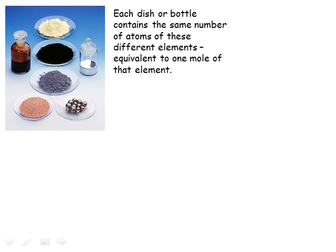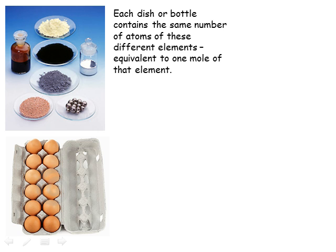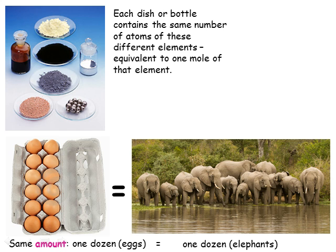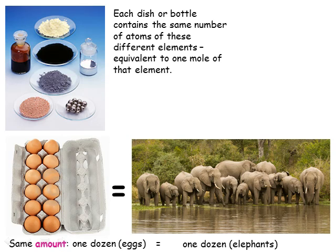We've discussed how a mole of one substance is the same amount as a mole of any other substance, but we ought to know how much a mole actually is. We know that a dozen eggs is 12 eggs, and a dozen elephants is 12 elephants, and that a dozen elephants don't weigh the same as a dozen eggs, even though we have the same amount. In the same way, a mole of eggs would be the same number as a mole of elephants, and the same as the number of atoms in a mole of each of these elements, and the number of water molecules in a mole of water.